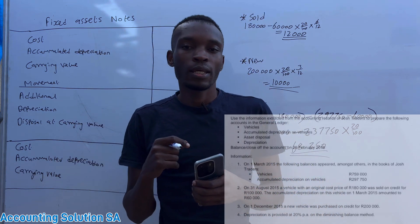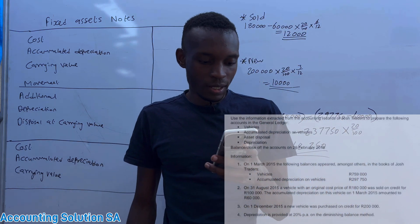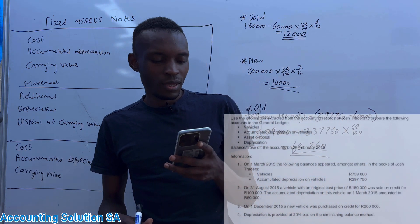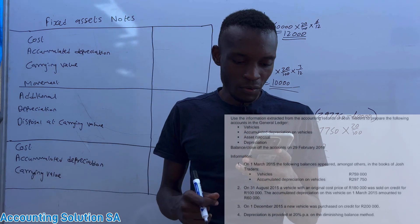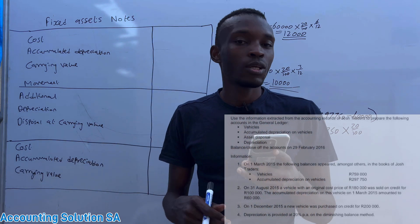Let's take eye on our transactions. The information that we have, they said on 1 March 2015 the following balance appeared among others in the books of George Traders. So basically this is the opening balances.